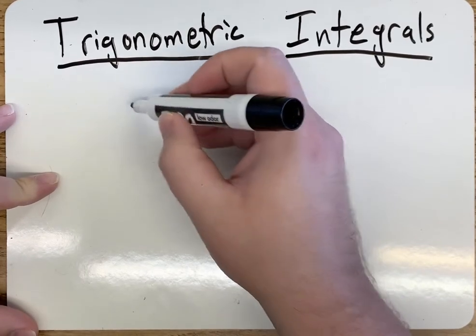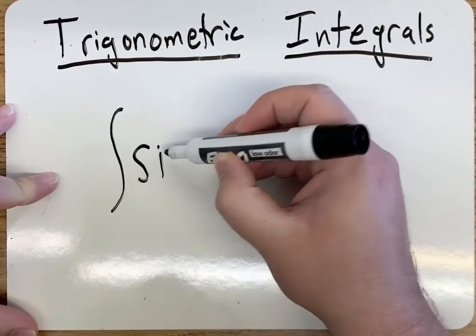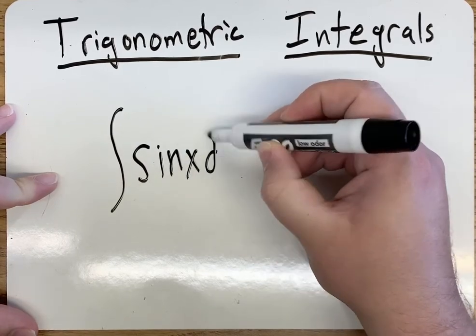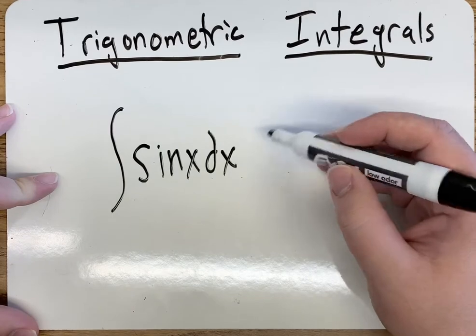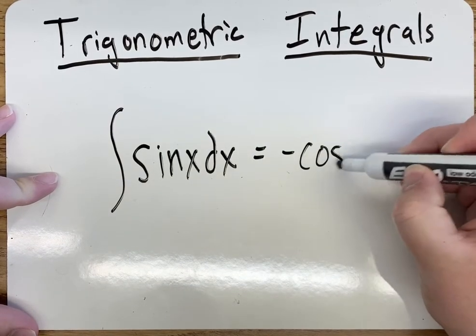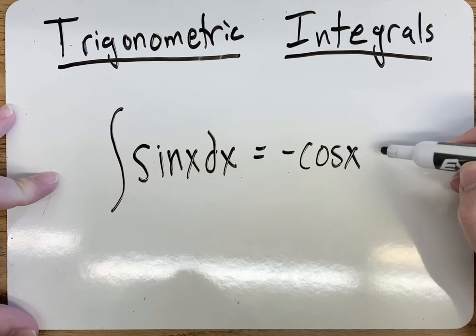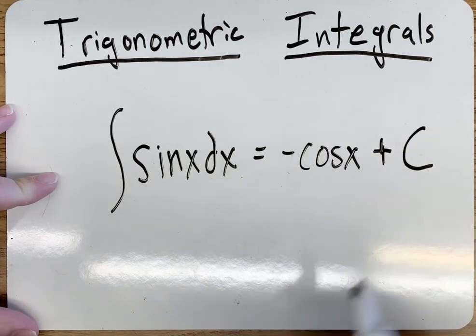I'm getting started with our first one, probably the most common, sine x dx. Now just remember this is kind of flipped from your derivative, so this ends up being negative cosine of x plus c, never forget that plus c.